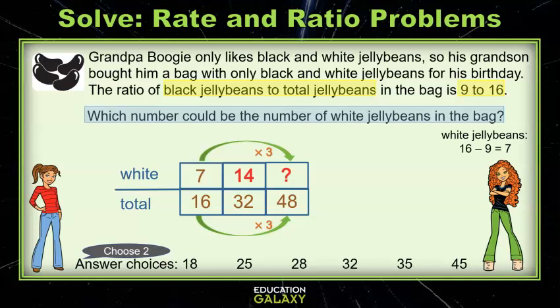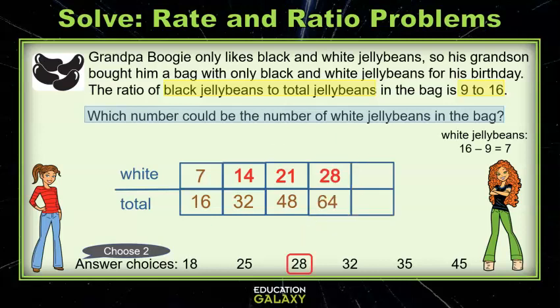Now I'm multiplying by 3. Keep going. Now I'm multiplying by 4. Out of 64 total jelly beans, 28 would be white, and that's one of our answer choices. Keep going to find the second answer choice.